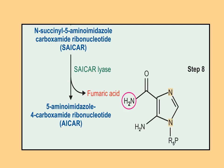Step eight: succinylaminoimidazole carboxamide ribonucleotide, SAICAR, is converted by the enzyme SAICAR lyase. By removal of fumaric acid or fumarate, aminoimidazole carboxamide ribonucleotide, AICAR, is formed. If you remember the short forms you can easily identify which is the reactant and which is the product.